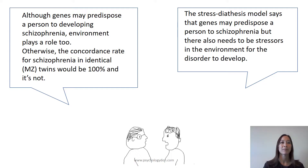Although genes may predispose a person to developing schizophrenia, environment plays a role too. Otherwise, the concordance rate for schizophrenia in identical MZ twins would be 100%, and it's not. The stress-diathesis model says that genes may predispose a person to schizophrenia, but there also needs to be stressors in the environment for the disorder to develop — for example, if someone experiences bullying, divorce, or abuse.